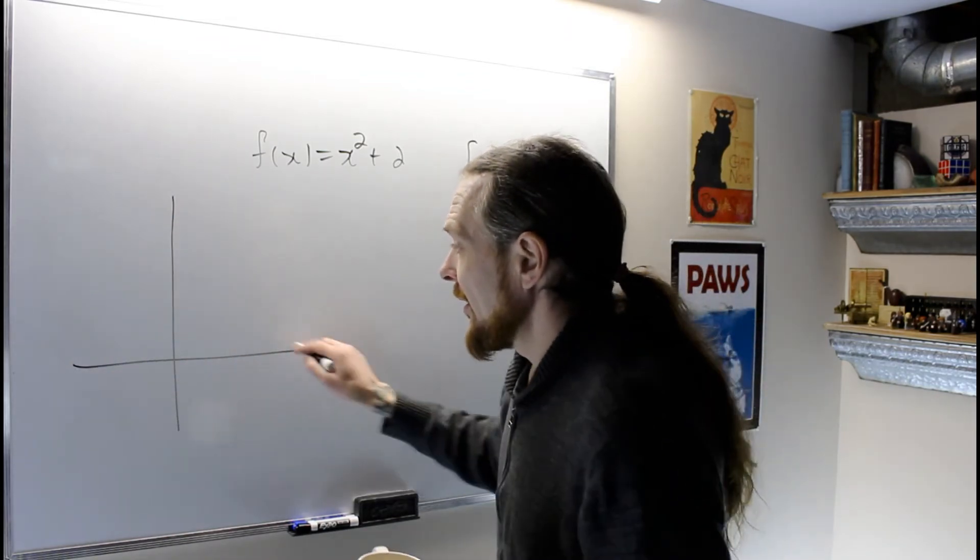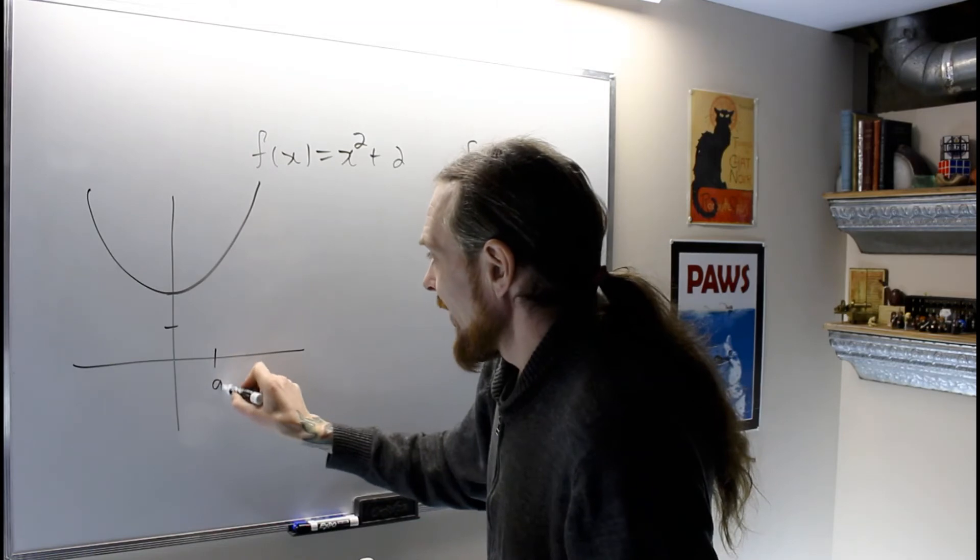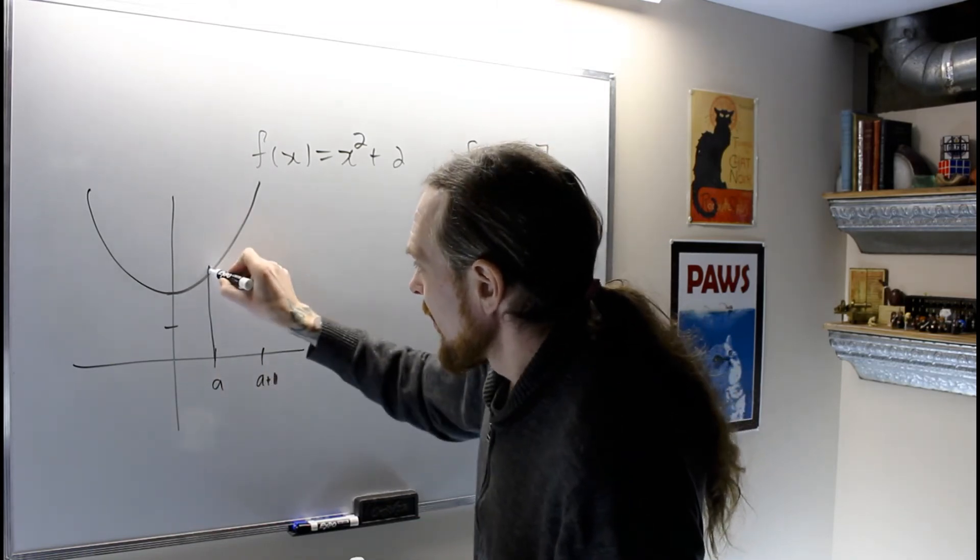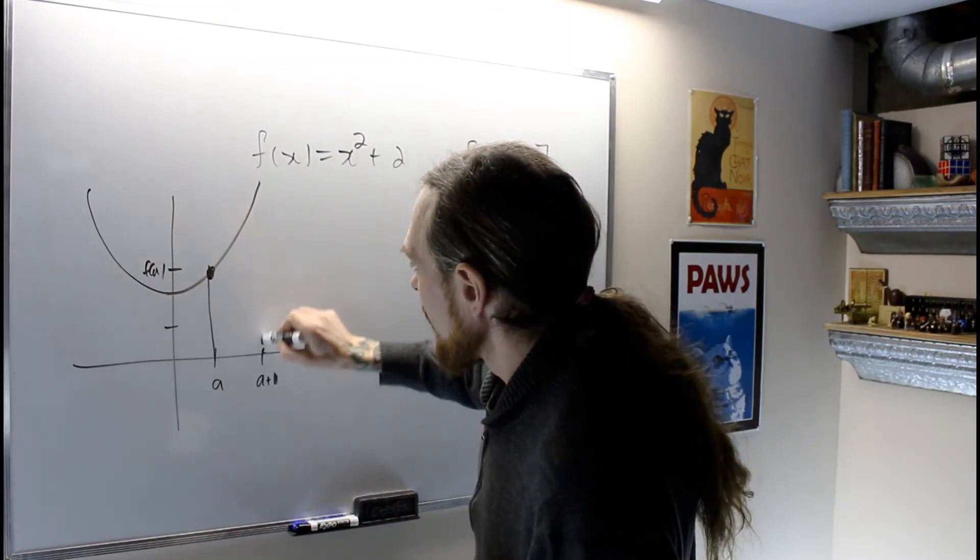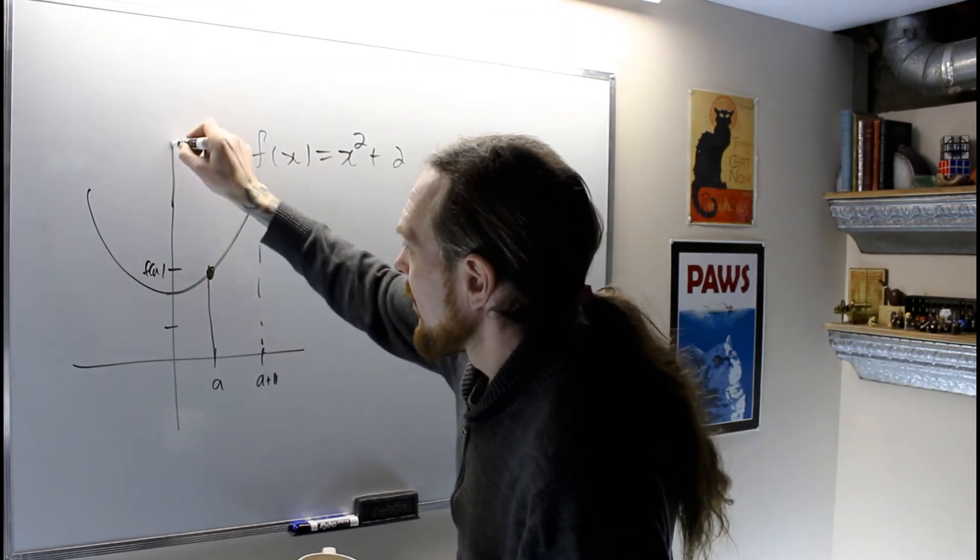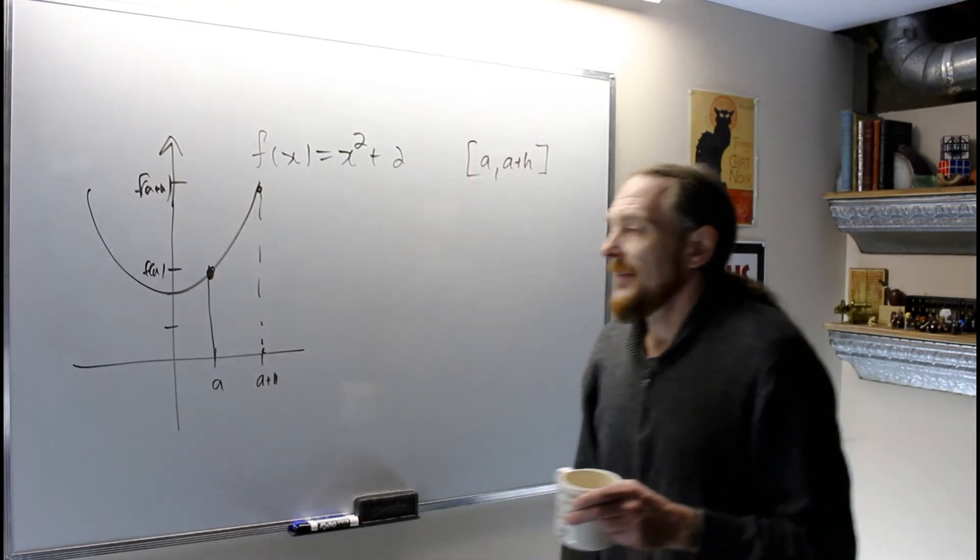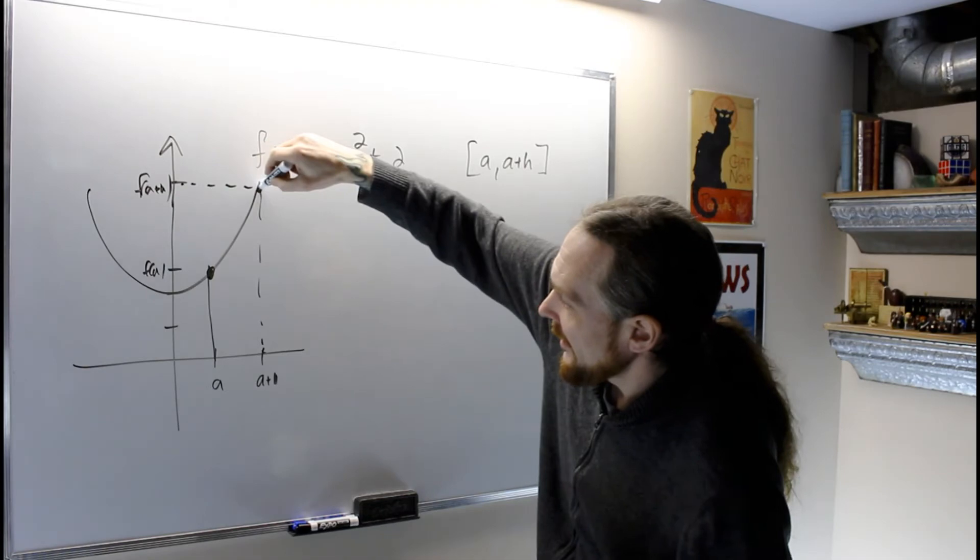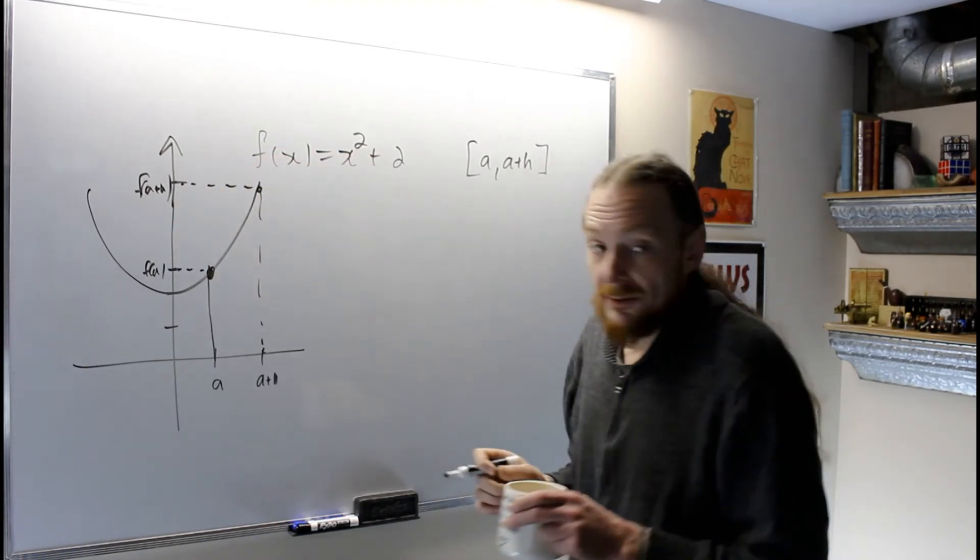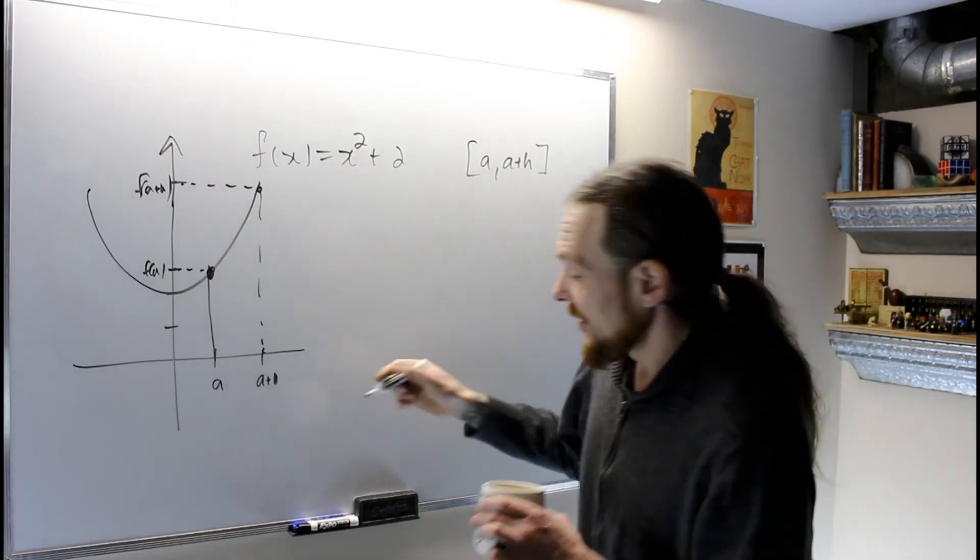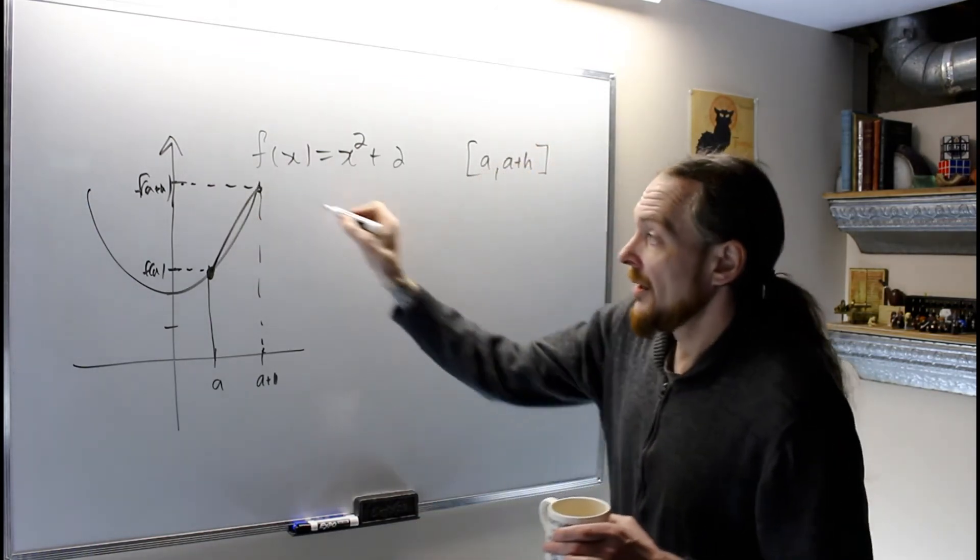What we're actually doing is, we have this parabola, we have a and a plus h, and this will be f(a), and this one will be f(a+h). You can't really see that, but what's going on is, the f average is going to be rise over run—it's the slope of the secant line joining these two points.